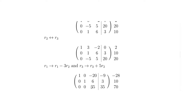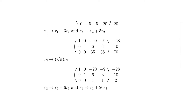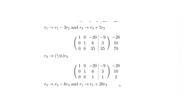Now we need a 1 in the bottom right position. We can simply divide row 3 by 35, since 35÷35 = 1. So row 3 becomes 1/35 of row 3. That takes care of that. Next we need to bring the other entries in column 3 down to zeros.